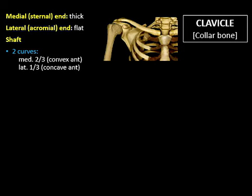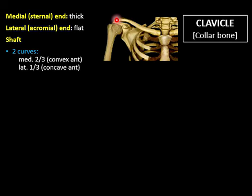Now we will start to study the clavicle. The clavicle is a long bone with two ends and a shaft. The medial end is quadrangular and articulates with the manubrium of the sternum to form the sternoclavicular joint, which is a saddle synovial joint. The lateral end is flattened and articulates with the acromion of the scapula to form the acromioclavicular joint, which is plain synovial.